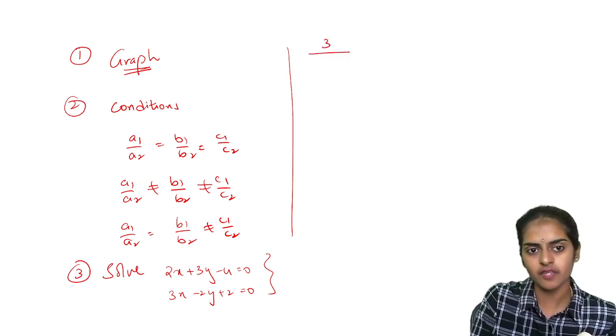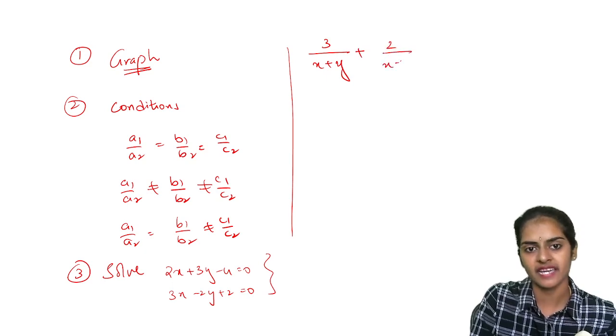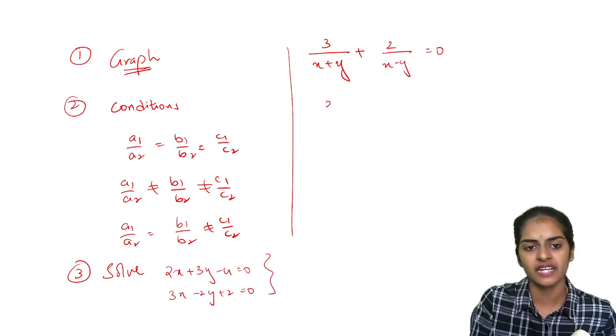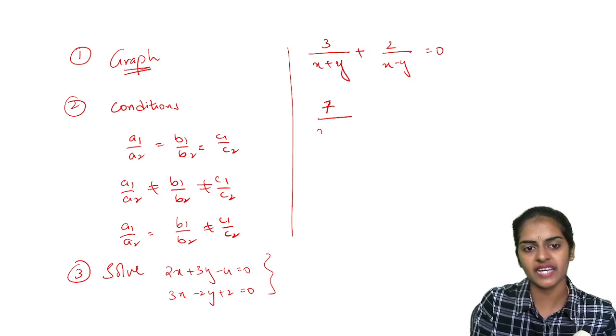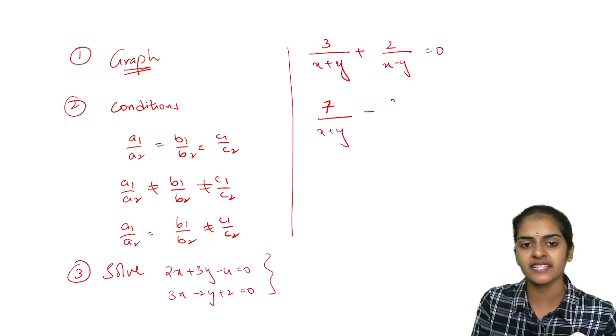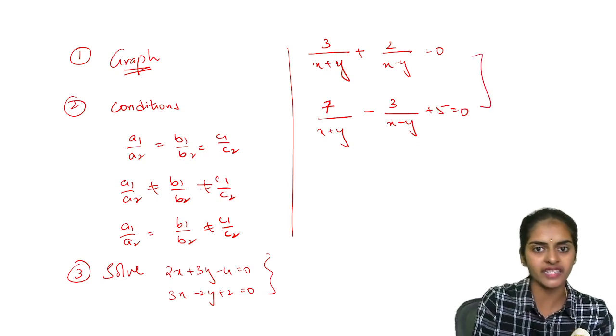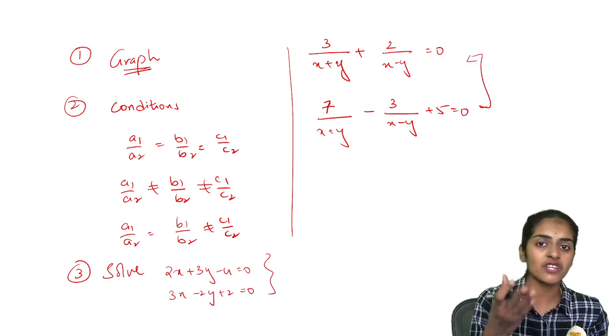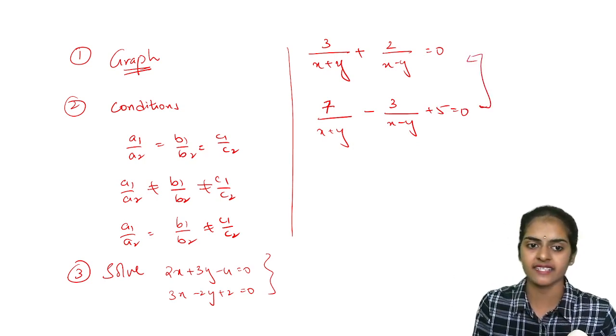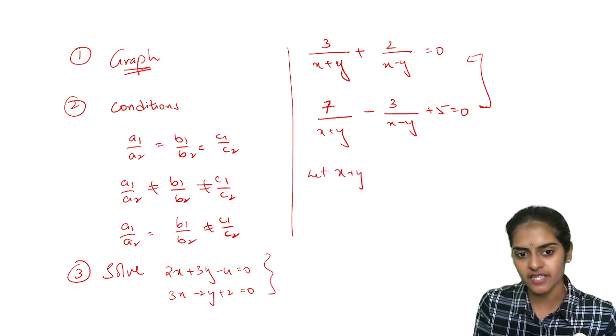They will give you like this: 3 by x plus y plus 2 by x minus y equal to 0, 7 by x plus y minus 3 by x minus y plus 5 equal to 0. Solve these two linear equations, equations reducible to linear form, last exercise.